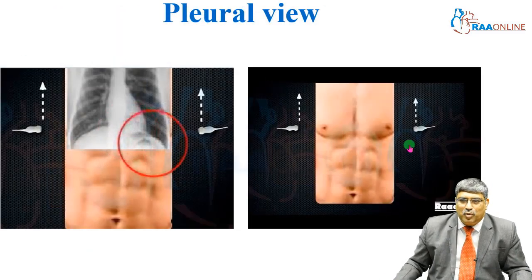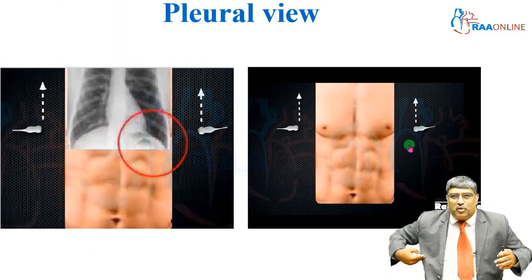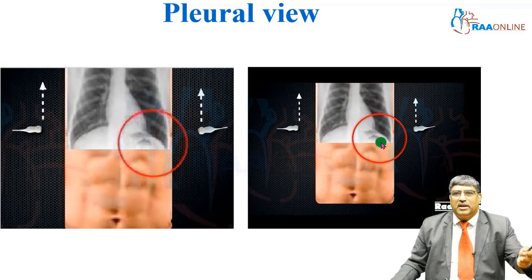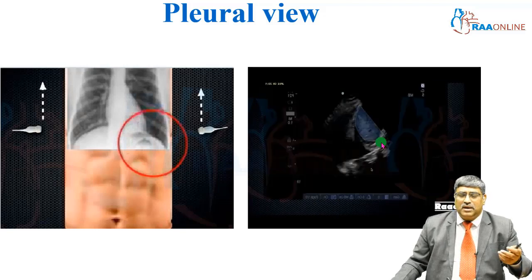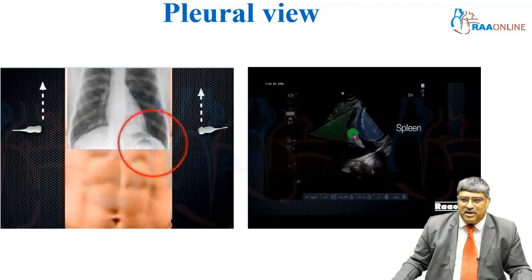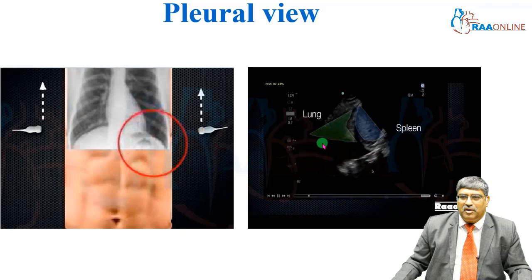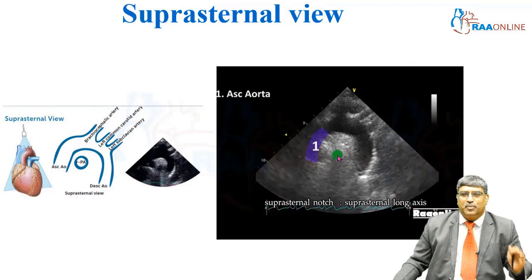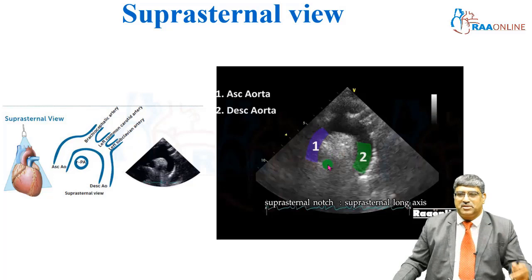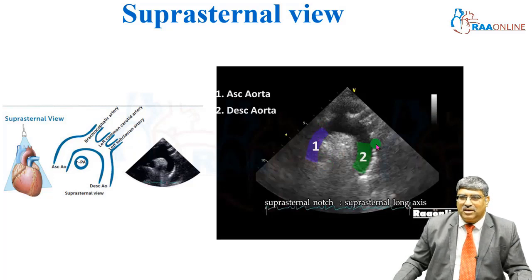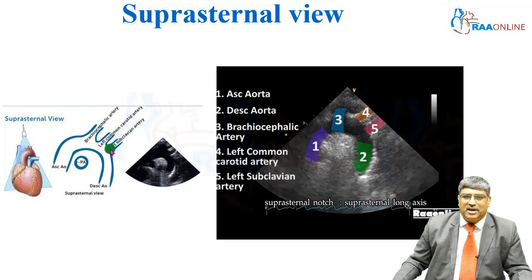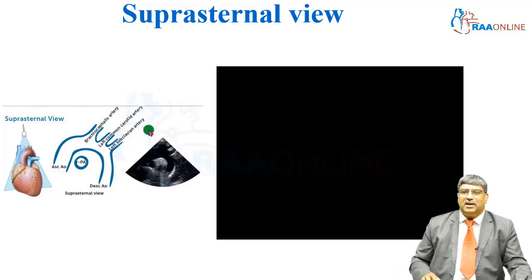Next comes the pleural view, where you place the probe sidewards and cross the spleen and lung to look for any pleural collection and for volume management. The last view is the suprasternal view. You place the probe on the suprasternal notch — this is the ascending aorta, this is the descending aorta, and this is the brachiocephalic, followed by the left common carotid and the left subclavian artery.